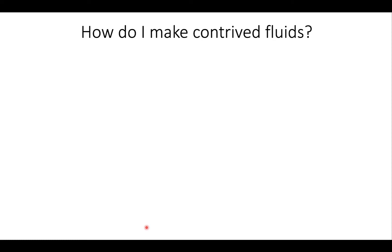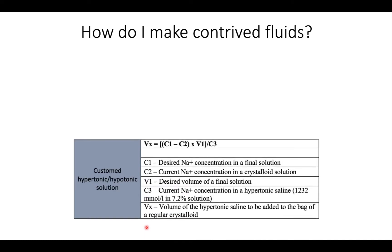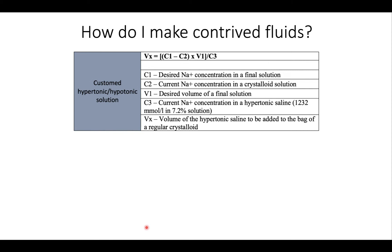Since you may not have access to a commercial solution with such a high sodium content, there's a formula to calculate how much concentrated solution you need to add to a different solution to make this contrived fluid. In this formula, Vx is the volume of hypertonic saline (7.2%) that you add to a bag of regular crystalloid to make a final solution with the desired sodium content. C1 is the desired sodium concentration in the final solution, C2 is the current sodium concentration in the crystalloid, V1 is the desired volume of the final solution, and C3 is the sodium concentration in the hypertonic saline. For 7.2% hypertonic saline, C3 is approximately 1232 millimoles of sodium per liter.